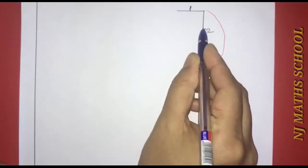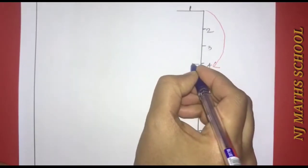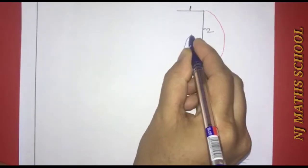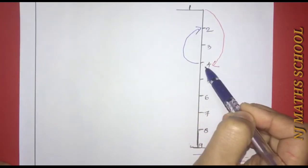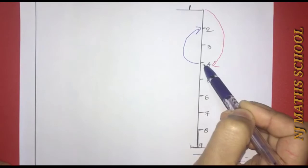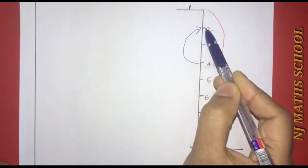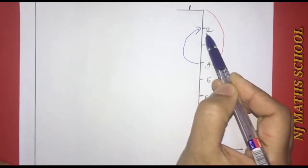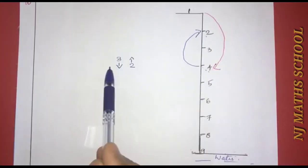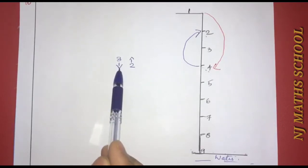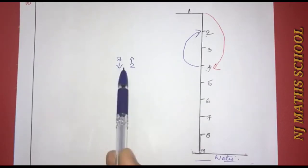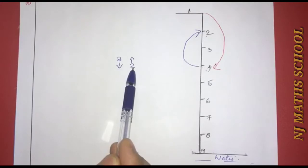One, two. Then we have two steps back. Three steps down, then two steps up. The first jump is three steps down. The next jump is two steps up.